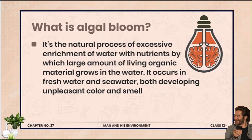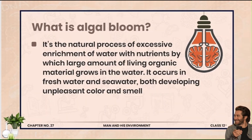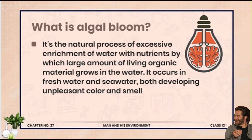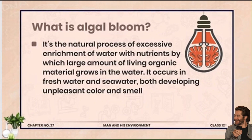Next: what is algal bloom? Aam water bodies mein kabhi kabhi phosphate aur sulfate ki bahut zyada excess ho jaati hai — sabse bada source industries aur domestic detergents hote hain. Jab ye nutrients bahut zyada enrich ho jaate hain to waisi jagah pe algae, fungi aur microorganisms grow karna shuru kar dete hain — yeh phenomenon algal bloom hai. Jab algae aur fungi surface cover kar lete hain to light aur oxygen penetrate nahi ho sakti, jis se aquatic organisms marne shuru ho jaate hain. Phir in algae aur fungi ki decomposition se buri smell aati hai aur water unfit ho jaata hai.